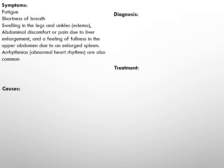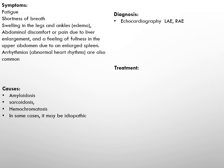Arrhythmias are also common. Causes of restrictive cardiomyopathy may vary, including infiltrative diseases like amyloidosis, sarcoidosis, and hemochromatosis. In some cases, it may be idiopathic. Diagnosis is done with echocardiogram, which may show left atrial enlargement and right atrial enlargement, cardiac MRI, and sometimes endomyocardial biopsy to identify the underlying cause and confirm the diagnosis.